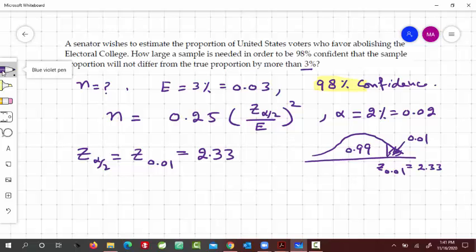Now you just plug in this value in this equation and get the answer. So n would be equal to 0.25 times 2.33 divided by 0.03, quantity squared. This gives 1,508.